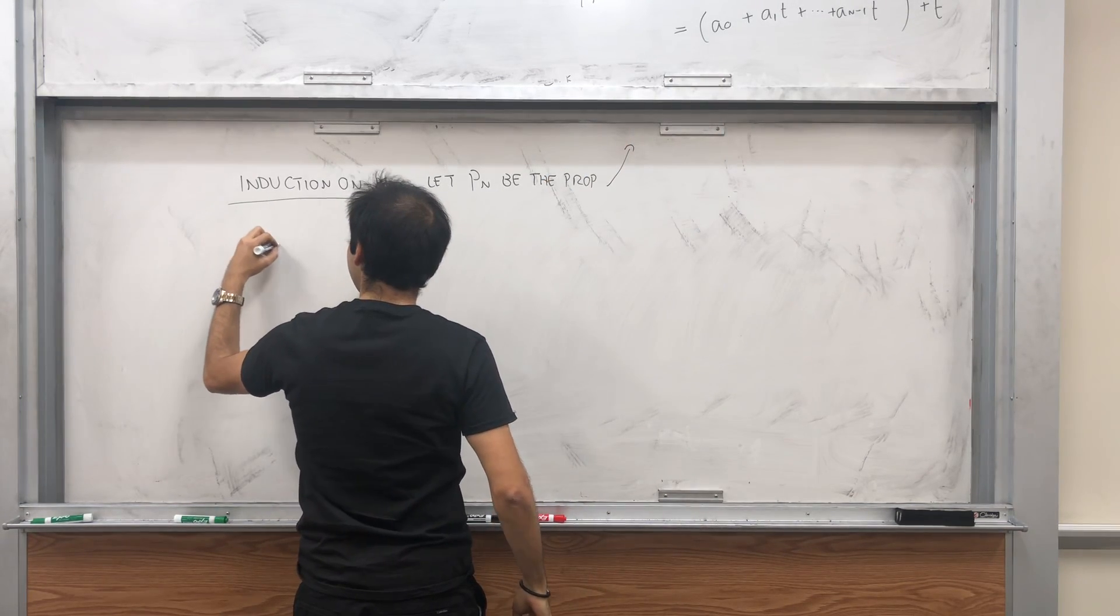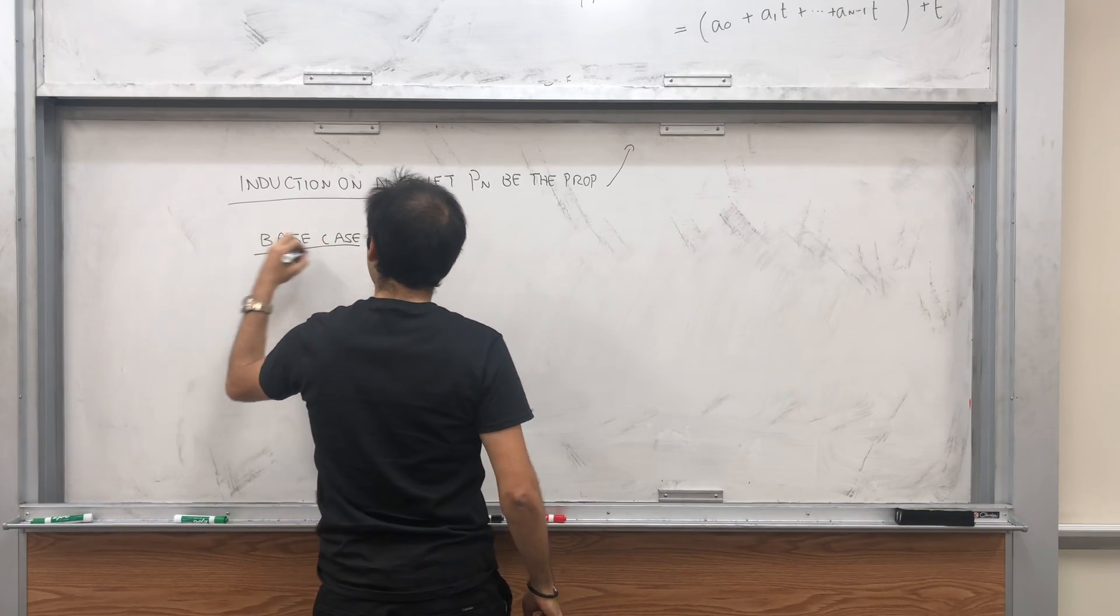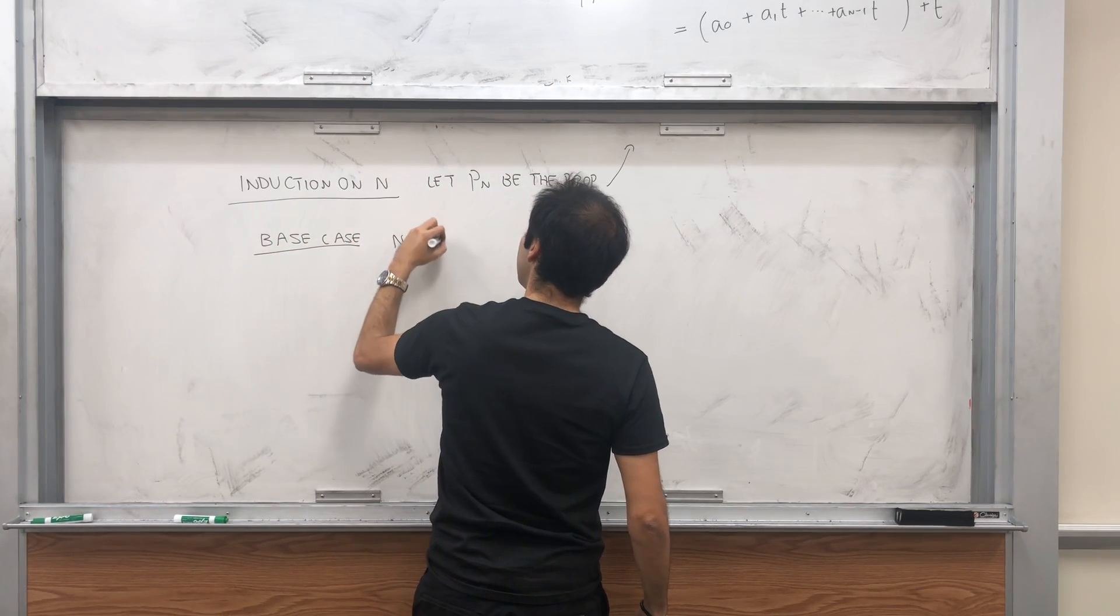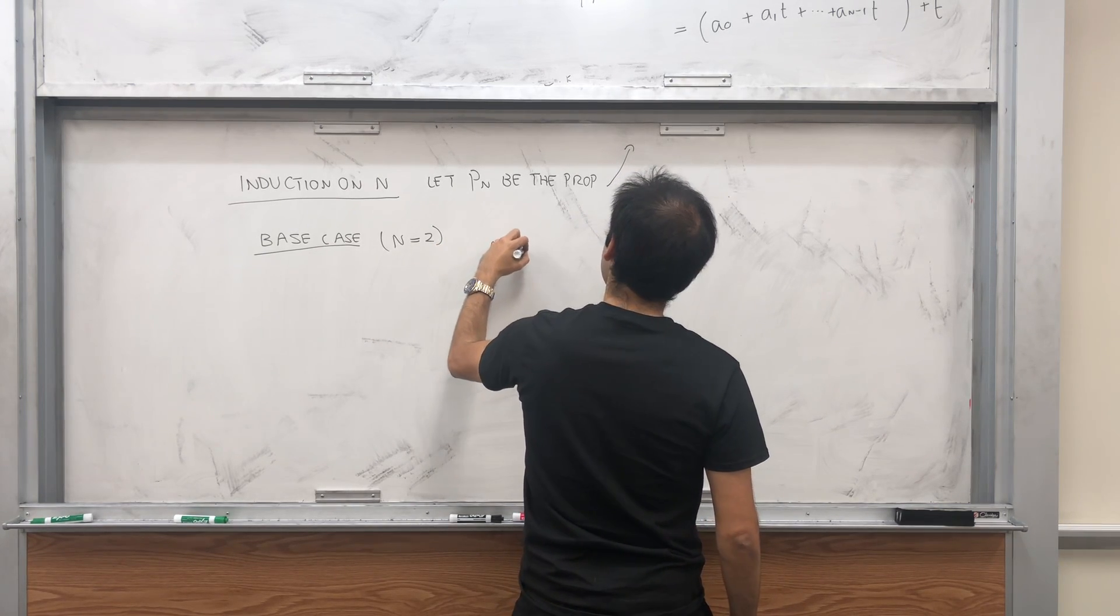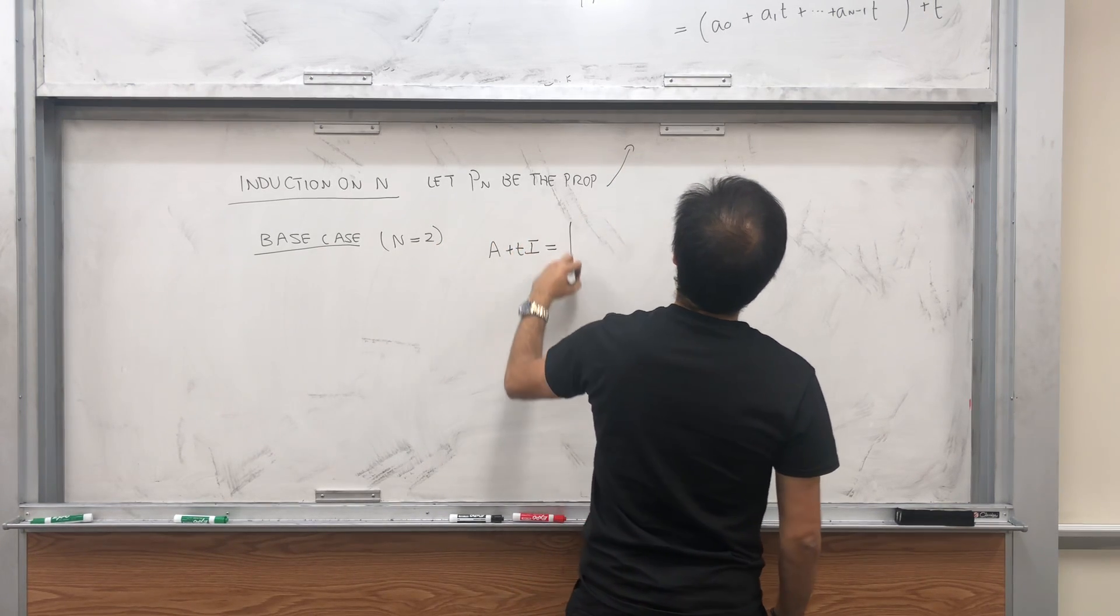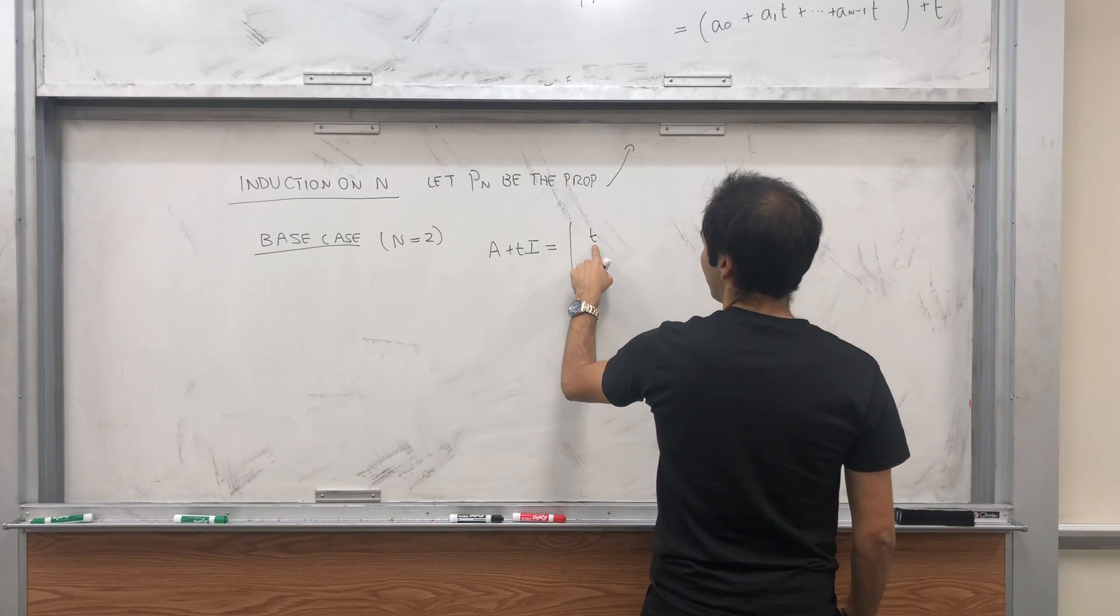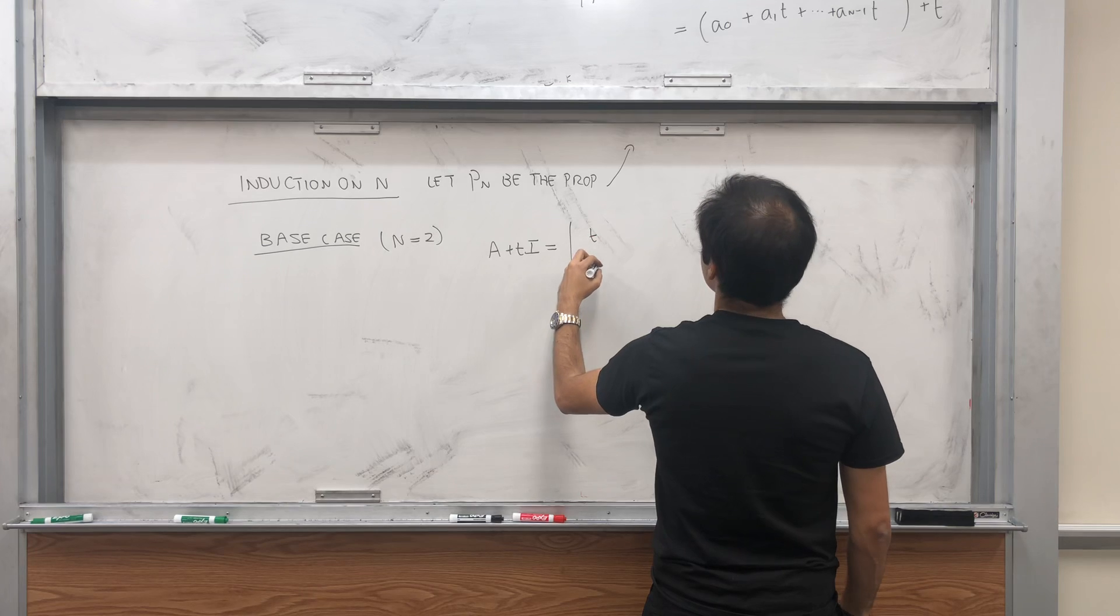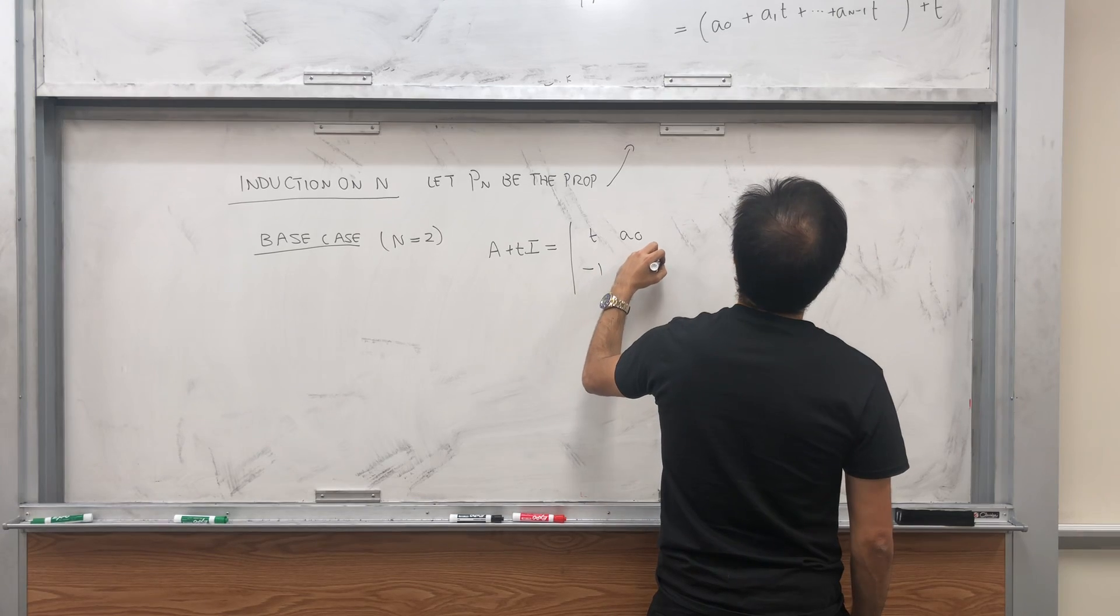Let's do it for, let's say, n equals 2. Then, let's do the base case. So for n equals 2, the matrix looks like that. So A plus TI, it's simply, again there's just one T here, I guess one T here.